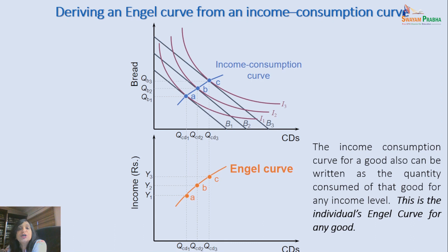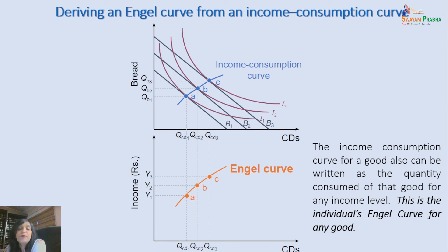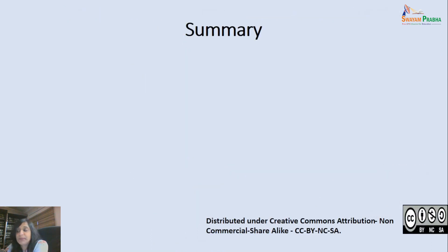The Engel's Curve tells you that at different income levels, how much of a particular good a consumer is buying. The income consumption curve was telling you the various quantities of two goods which the consumer buys as money income increases and equilibrium changes. An income consumption curve, when redrawn from the point of view of income and the quantity of one particular good at various income levels, is called the Engel's Curve.